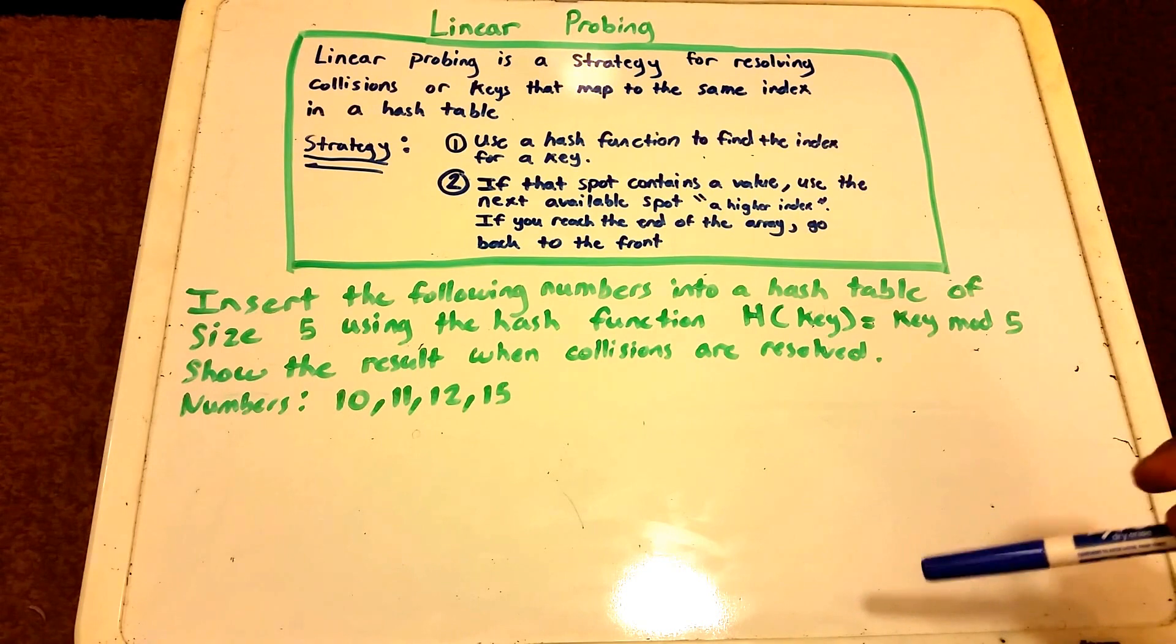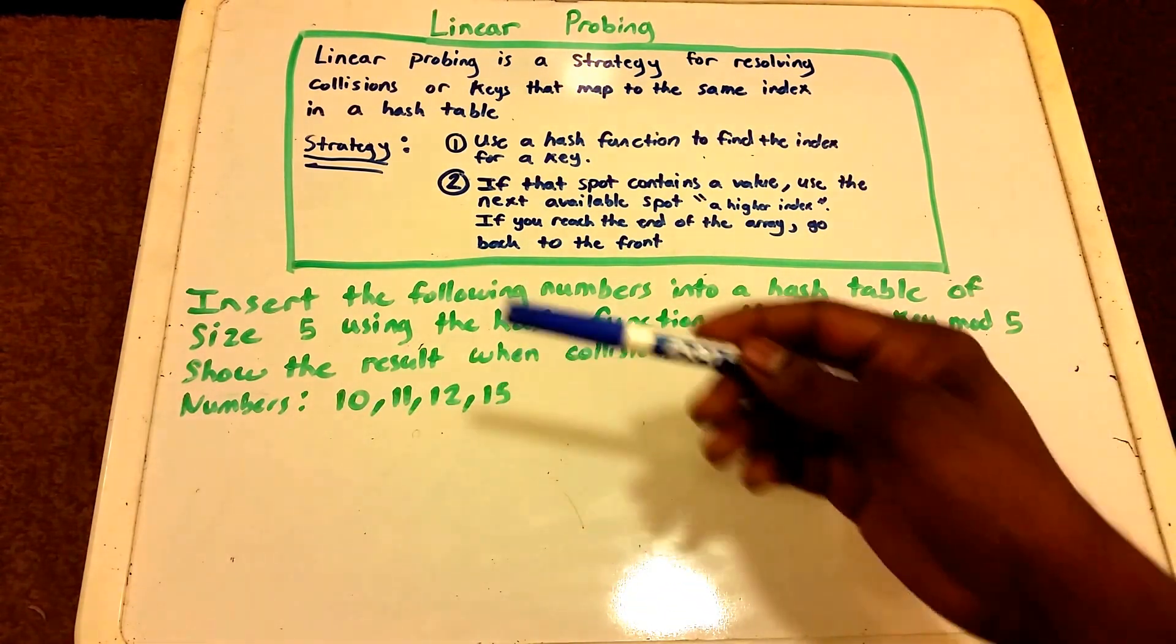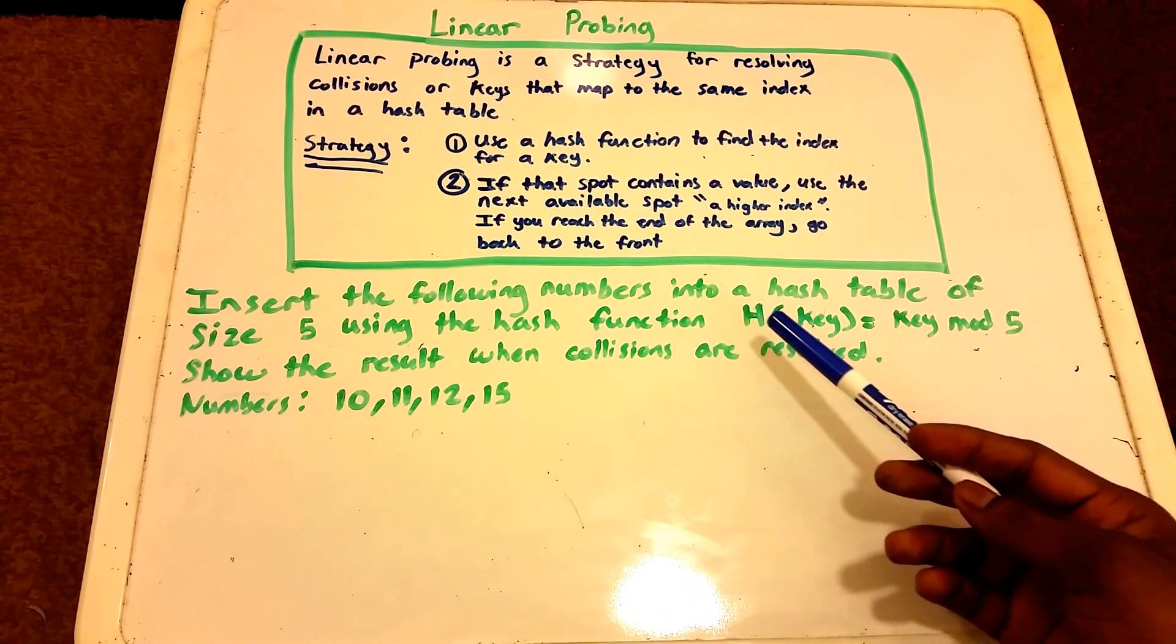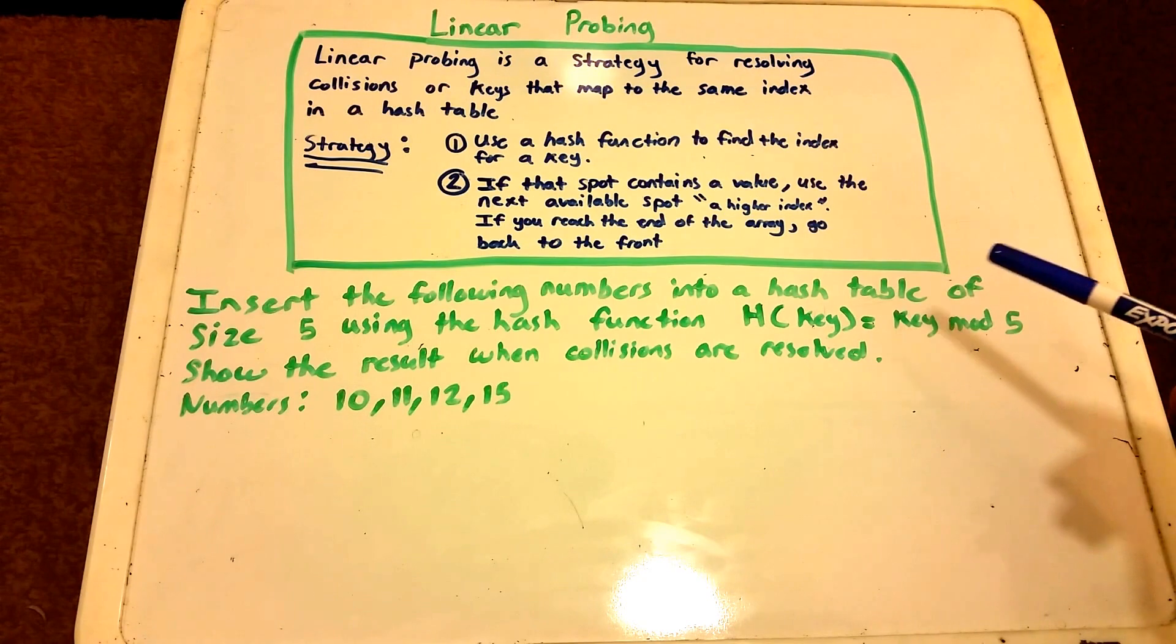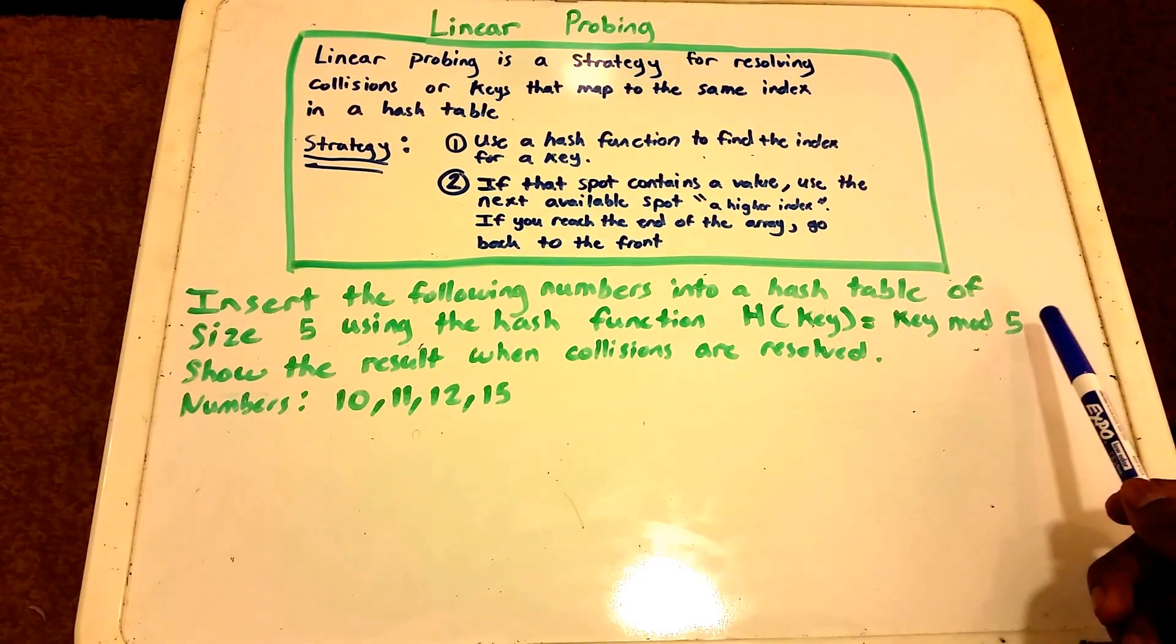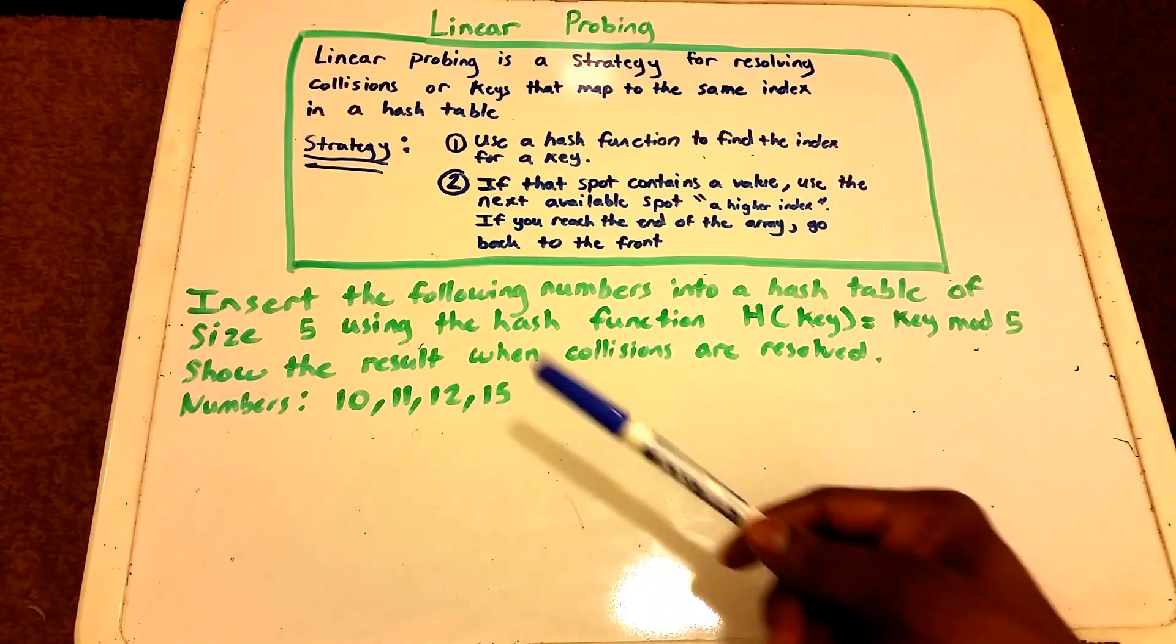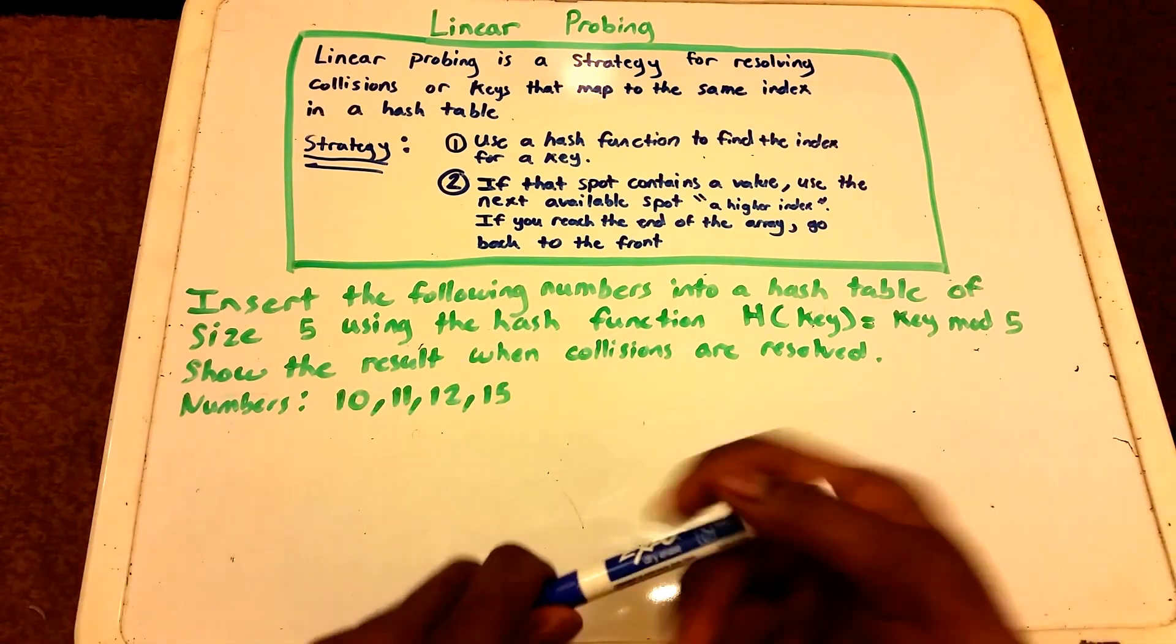Here we have the problem or the question and it says to insert the following numbers into a hash table of size 5 using the hash function that we call H that takes in a value called key where it returns a hash value equal to key mod 5. Then we want to show the results when the collisions are resolved. So here are our numbers or keys: 10, 11, 12, and 15.